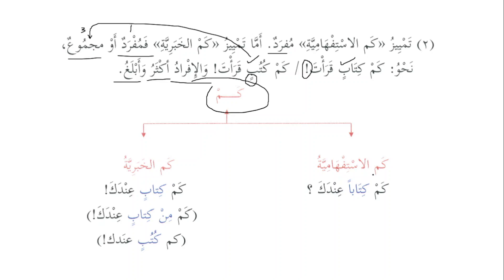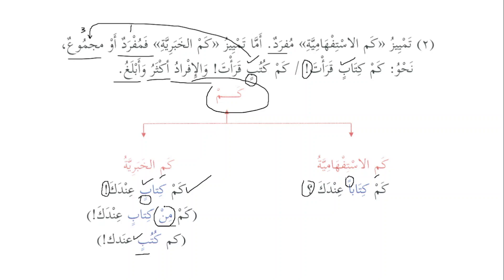Summary: kam al-istifhamiyya — 'Kam kitabun 'indaka?' — how many books do you have? (question mark, tamyiz mansoob, singular, nakirah). Kam al-khabariyya has three possibilities: 'Kam kitabin 'indaka' (singular, majroor — most eloquent), 'Kam min kitabin 'indaka' (with emphatic min), or 'Kam kutubin 'indaka' (plural). The sheikh says the singular form is ablaghu and we should focus on it.